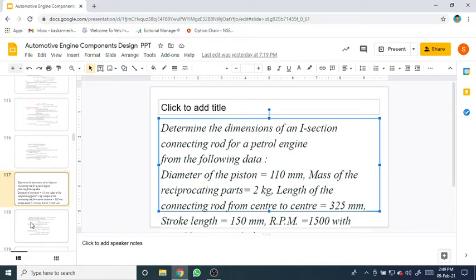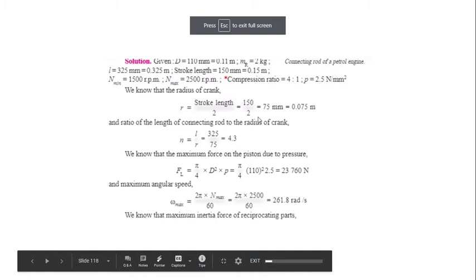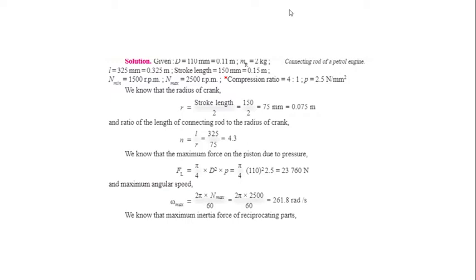This is a numerical problem for a petrol engine connecting rod. For the solution: diameter d = 110 mm = 0.110 m, mass of reciprocating parts m_r = 2 kg, connecting rod length l = 325 mm = 0.325 m, stroke length L = 150 mm = 0.15 m. Two speeds are given — minimum speed N_min = 1500 rpm, maximum speed N_max = 2500 rpm. Compression ratio r = 4, and pressure p = 2.5 N/mm².